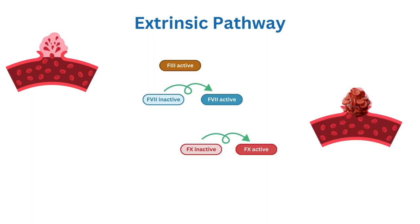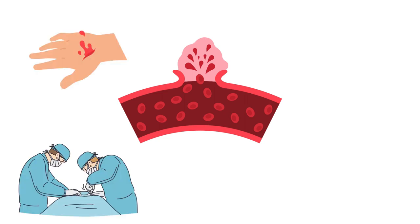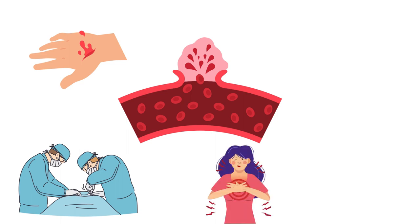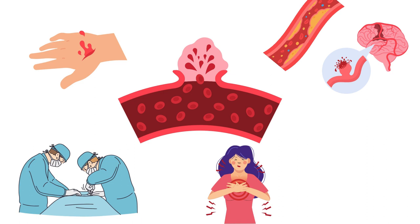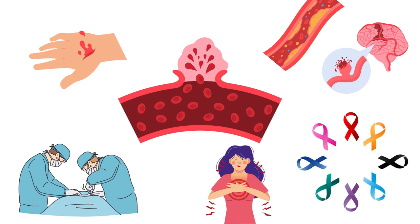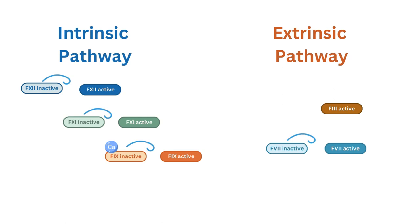Examples of causes that can trigger the extrinsic coagulation pathway include trauma or injury to tissues outside the blood vessel, surgical procedures, inflammatory conditions, and certain diseases or conditions affecting the vascular system, such as atherosclerosis or aneurysms.